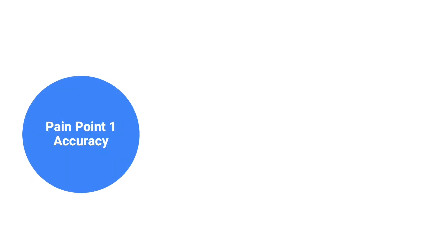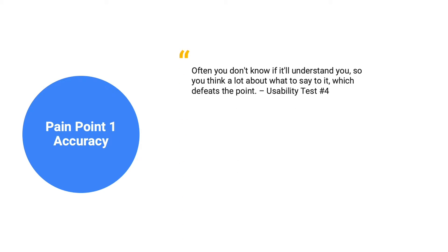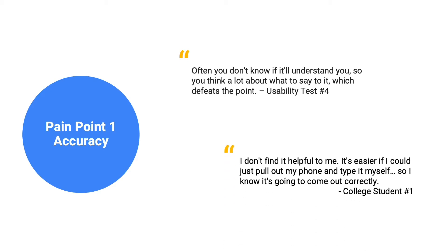The first pain point is accuracy. Accuracy was a key reason users in our target demographic didn't use voice technology more often. Users felt they had to 'computer speak' to make GA understand them. Multi-step commands often failed for complicated tasks, and users expected GA to remember the context of their previous conversations, but it wasn't able to.